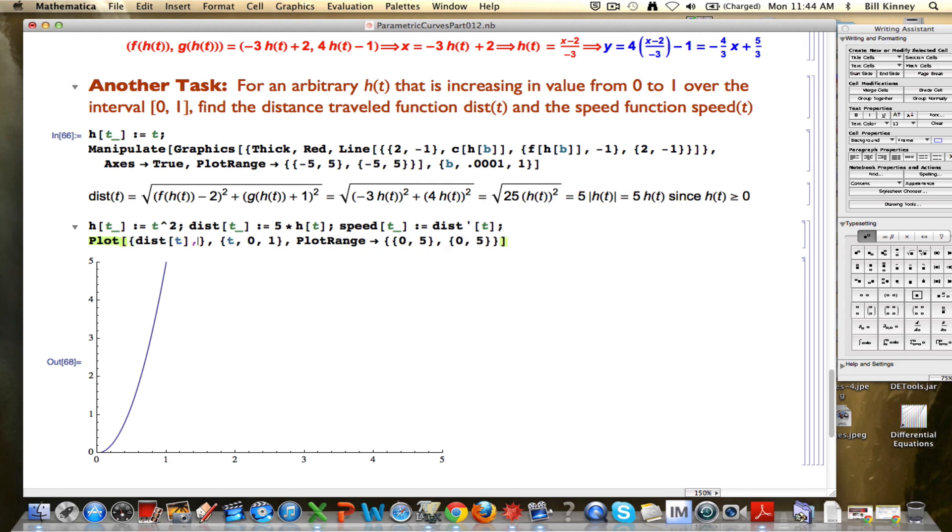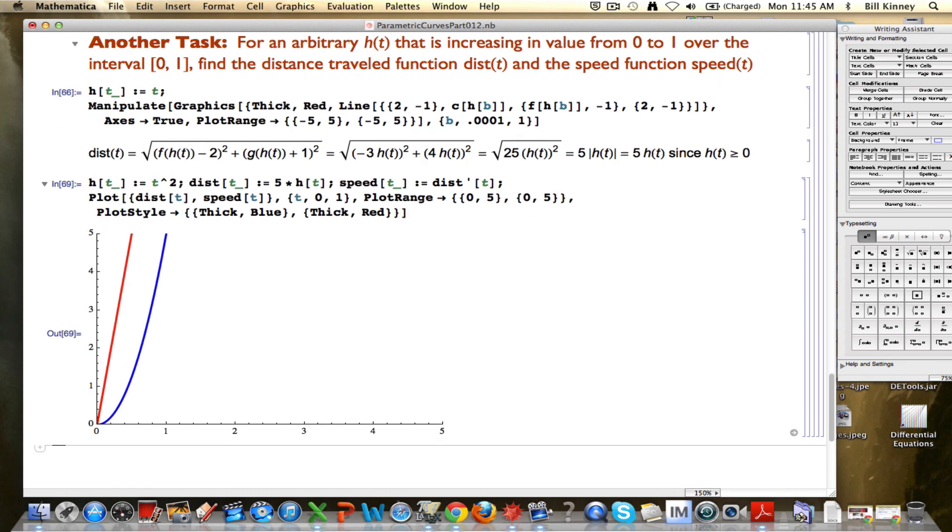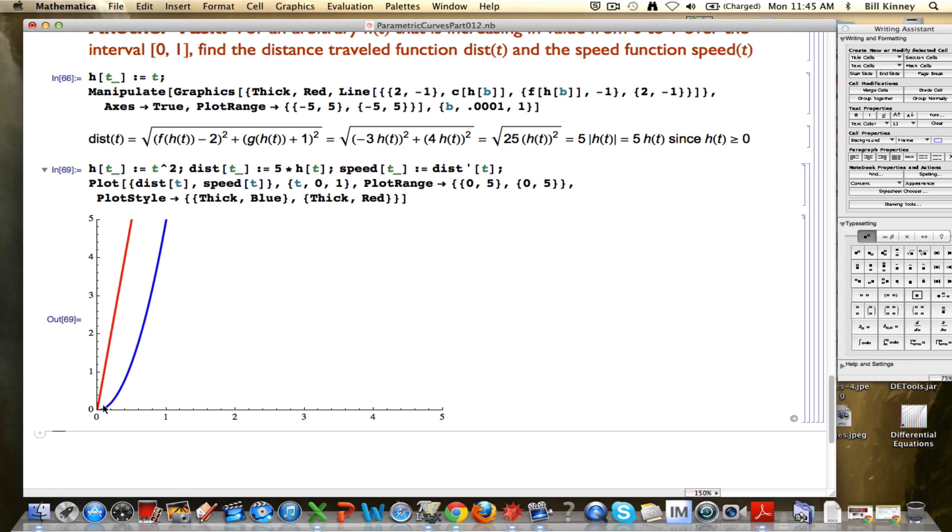What function will it be? Let's put it in here, speed of t, and let's color these things, plot style. I'll make the distance traveled function blue and make the derivative function, the speed, red. So the derivative, the speed, gives you the speed at every moment in time in meters per second.